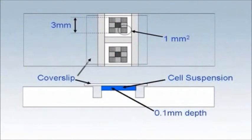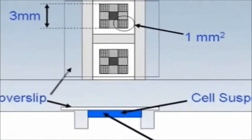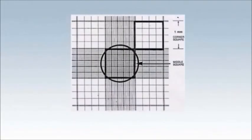When using an improved Neubauer hemocytometer, usually only the large corner squares, each of which is subdivided into 16 smaller squares, are used. The surface area of one of these large corner squares is 1 mm squared. The depth of the chamber above this is 1 tenth of a millimetre. Therefore, the volume above one large corner square is 1 tenth of a microlitre.